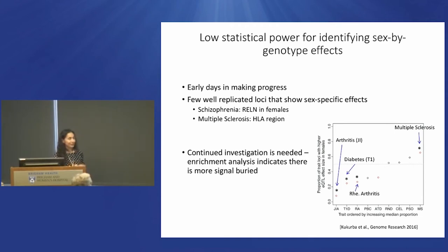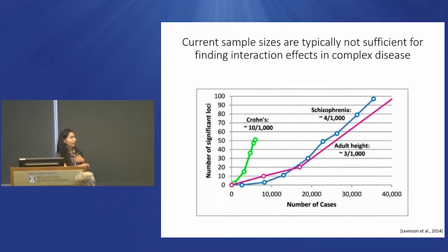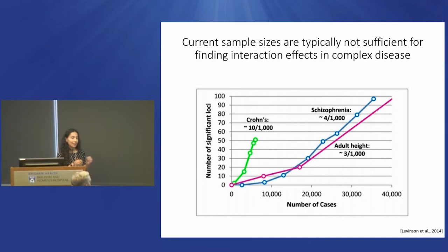We need to continuously look at this question and not give up too easily. Another line of evidence shows we don't have the statistical power to answer this question with current approaches. Looking at the number of significant hits for height, schizophrenia, and Crohn's disease as a function of sample size, we're nowhere near saturating our findings. If we cut sample size in half to compare effect sizes in males and females, we'd lose half our findings — implying we don't have enough samples to accurately estimate effect sizes in both sexes, which is needed to say they are different.